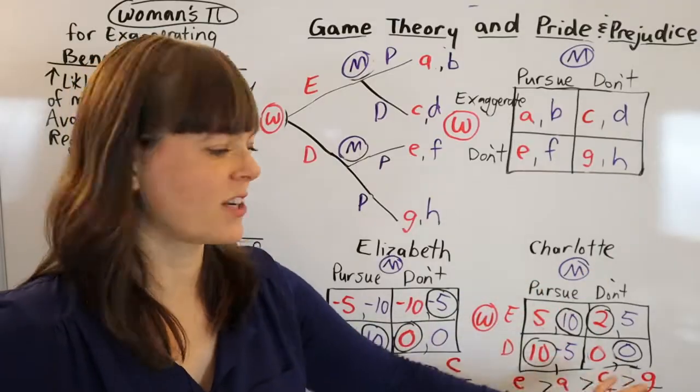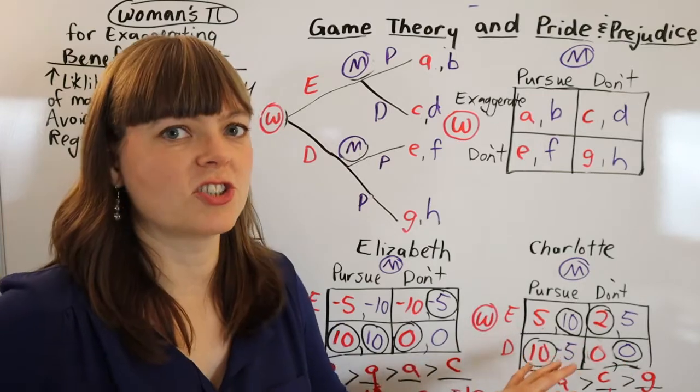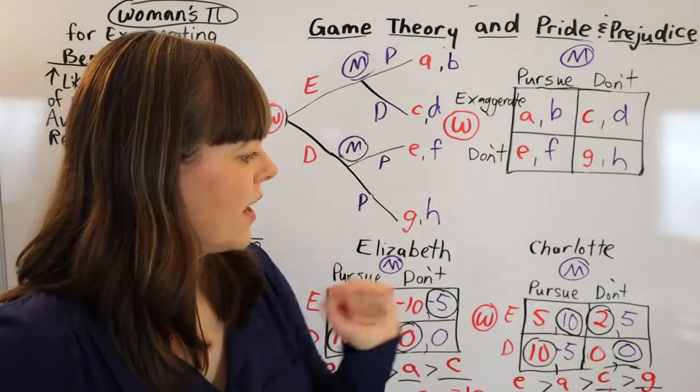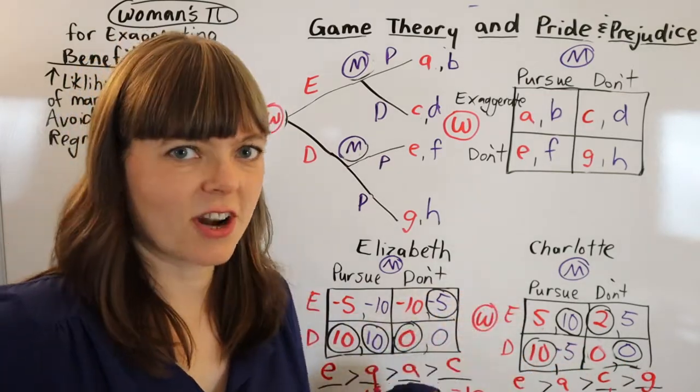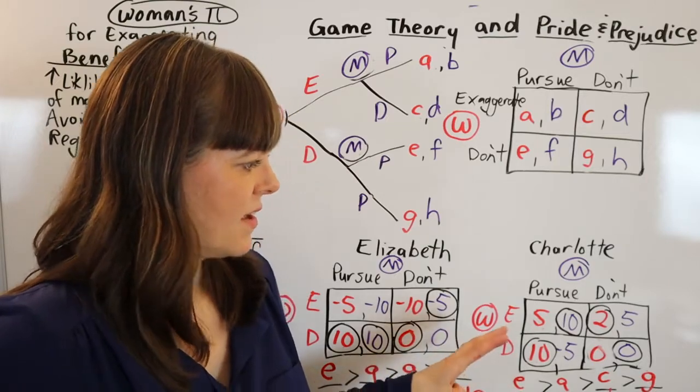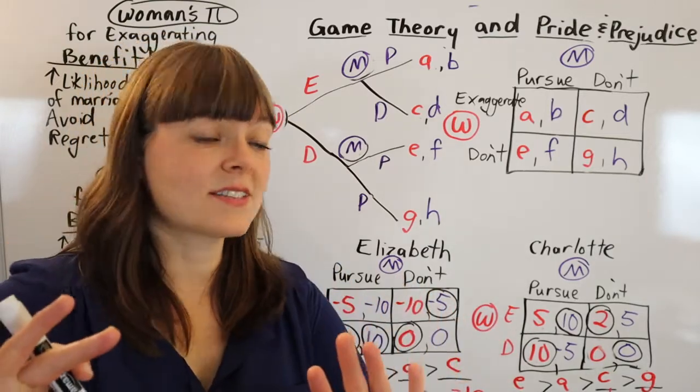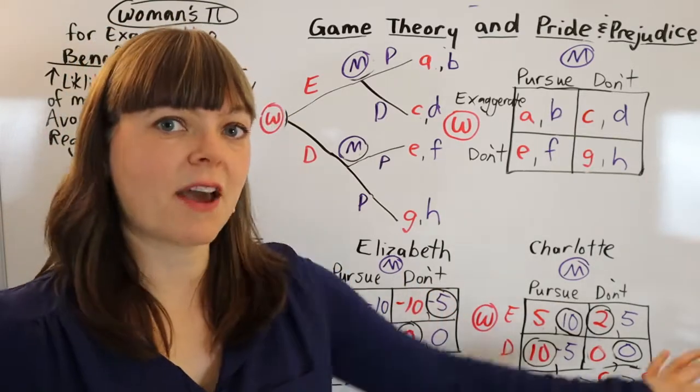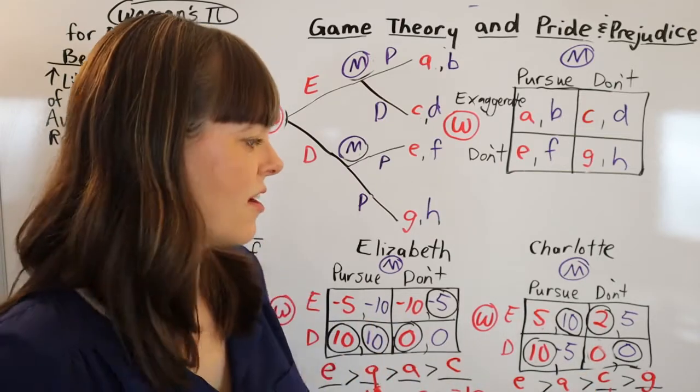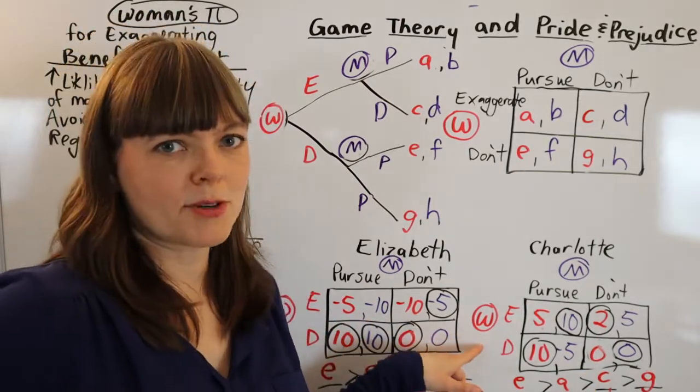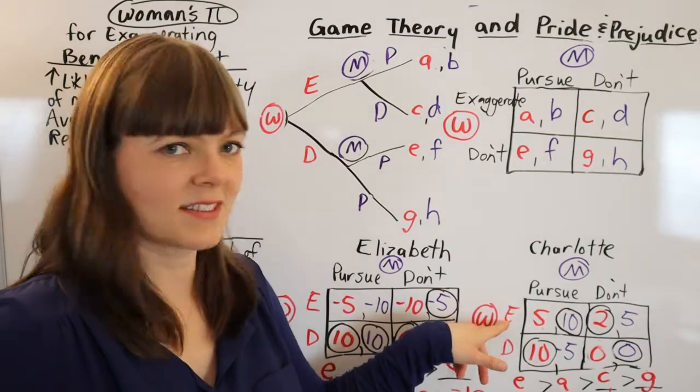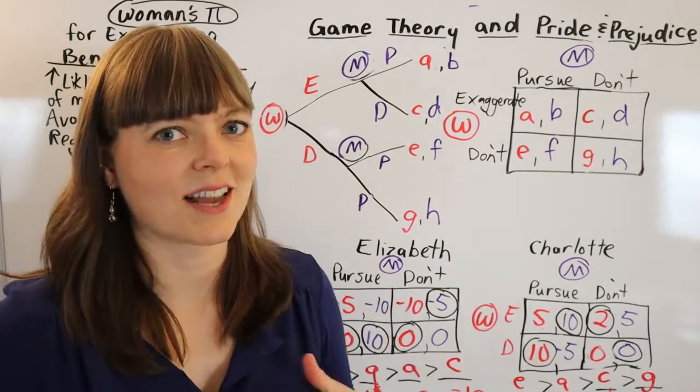Okay, so we've achieved a situation with no pure strategies Nash equilibrium, in which case we're going to have a mixed strategies equilibrium. Now, this process is not done because this payoff matrix is not going to work until we get the woman's optimal payoff to be 90% exaggerate, 10% don't exaggerate.